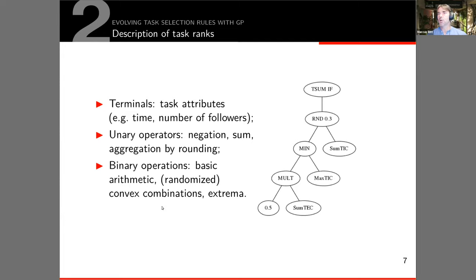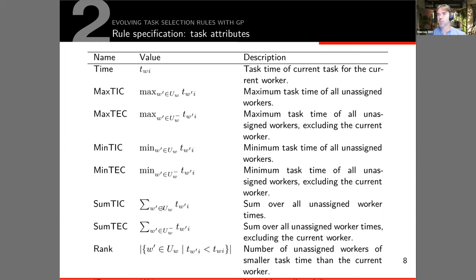Let me show you briefly how we represent the task ranks to select the tasks. We have a set of terminals which are the task attributes, we have a couple of unary and binary operators which go over task priorities. We can basically have arithmetic expressions, we can aggregate these, and on the right-hand side you can see an example of such a rule, it's an expression tree.